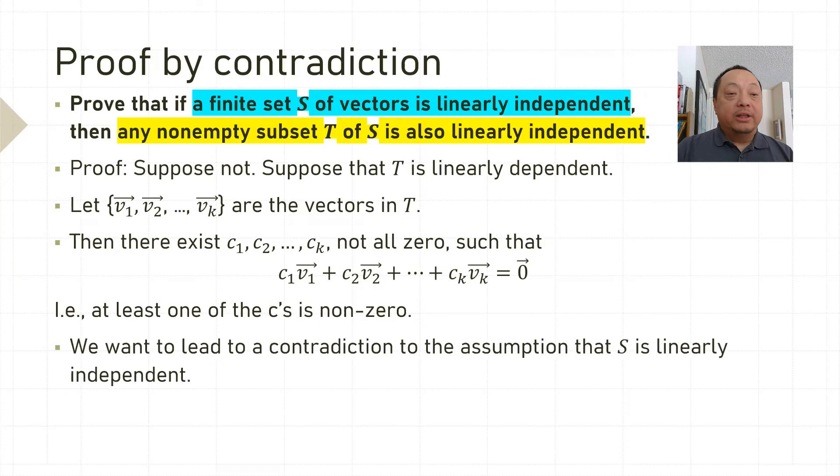We want to lead to a contradiction. We probably want this to contradict the assumption that S is linearly independent. That means we need to know what the vectors in S are, right? The definition of S being linearly independent is about the vectors in S. So what are they?